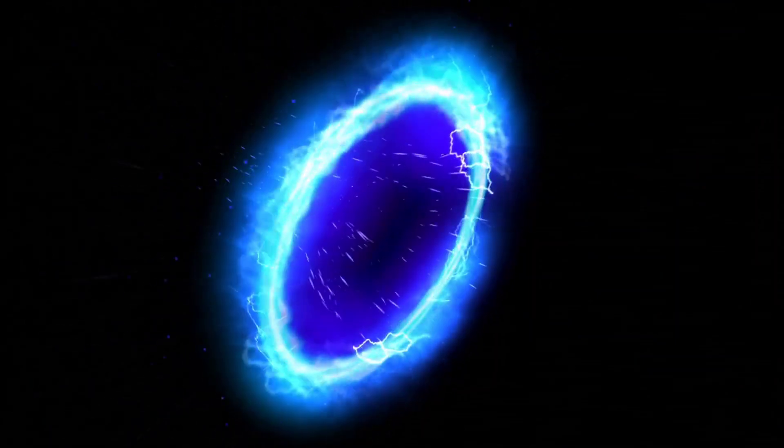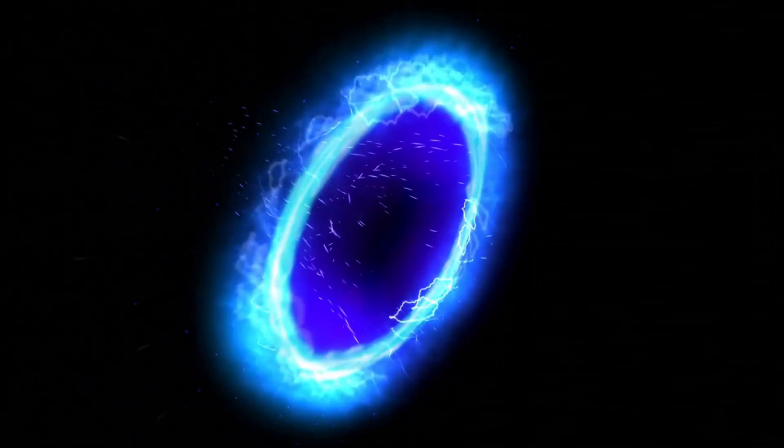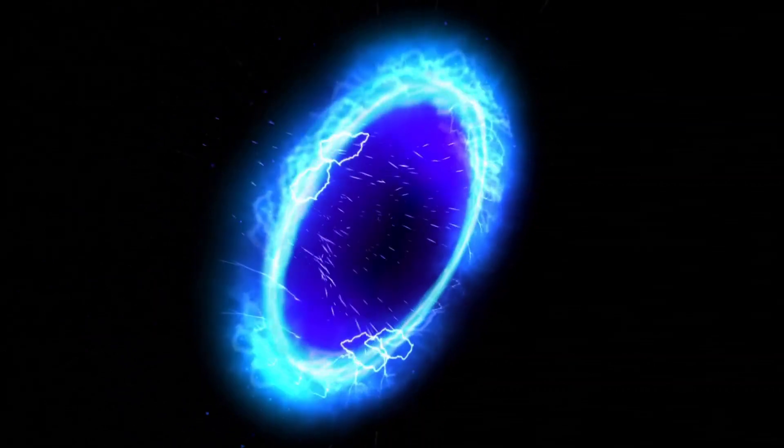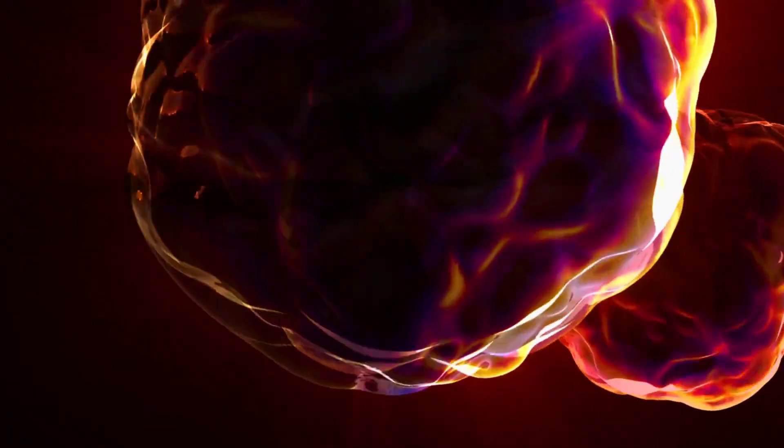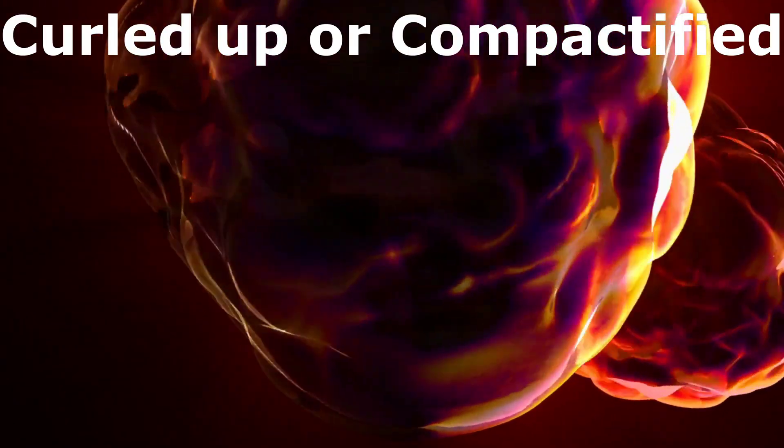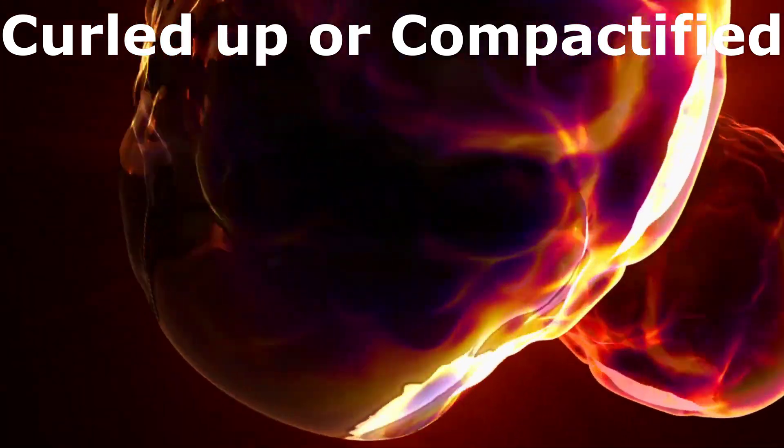String theory proposes that these additional spatial dimensions are too small for us to observe directly. These dimensions are thought to be curled up or compactified, meaning that they are tightly wrapped up in tiny loops or shapes that we cannot see or perceive.